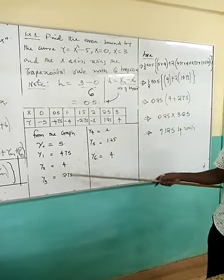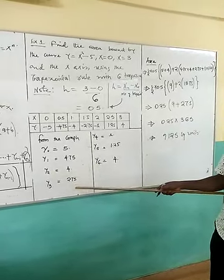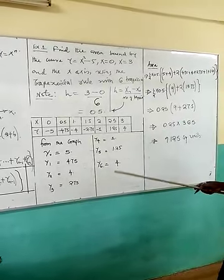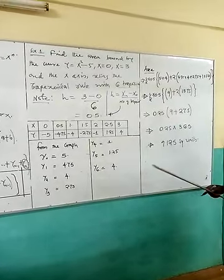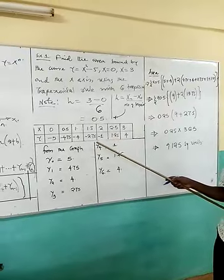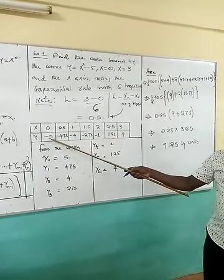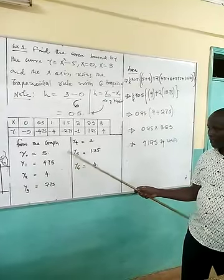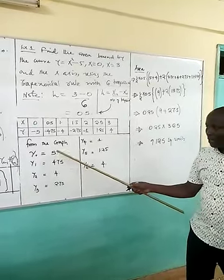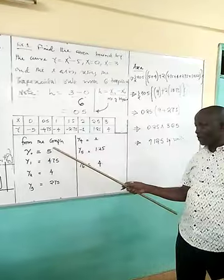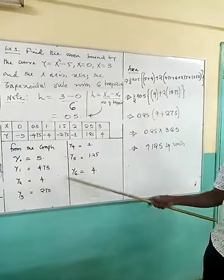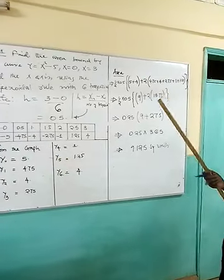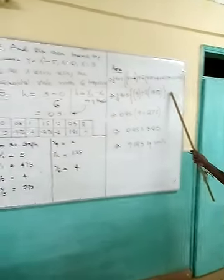And I've simply summarized those values of y as shown. As 5, 4.75, 4, 2.75, 1, 1.25, and 4. Now in the grid, you'll see that the values are negative, which is okay. But getting the area, we will use the absolute values of y, which I now have, I now have all the values to be positive. These are what I substitute here.